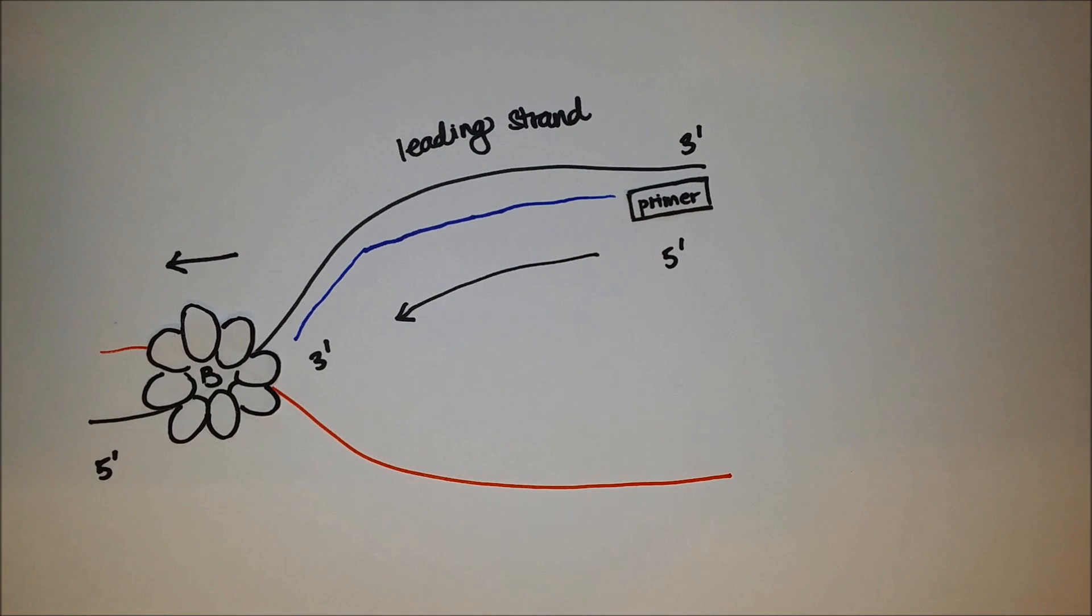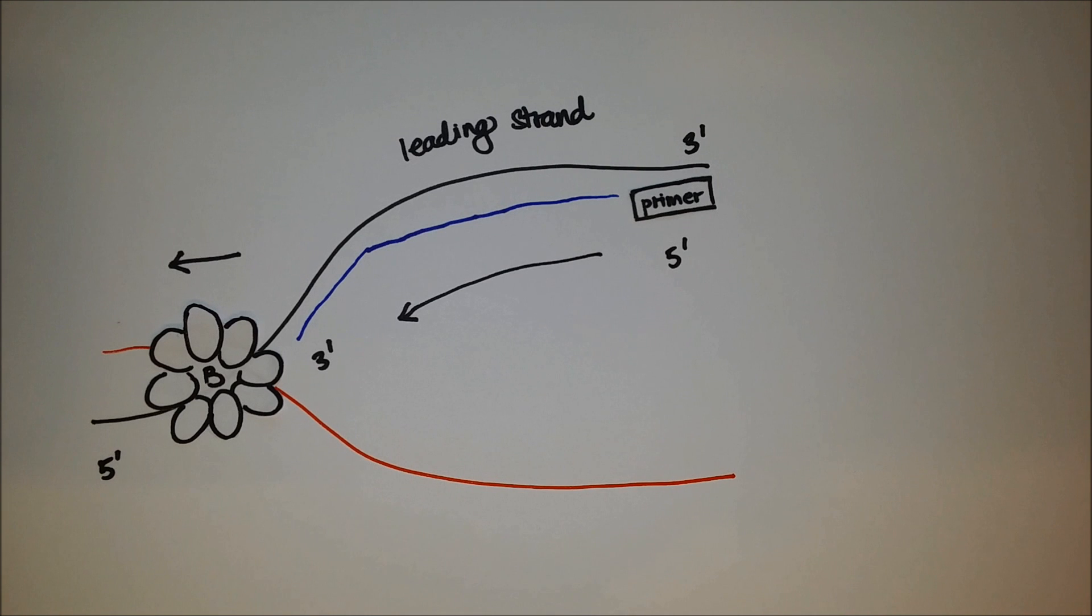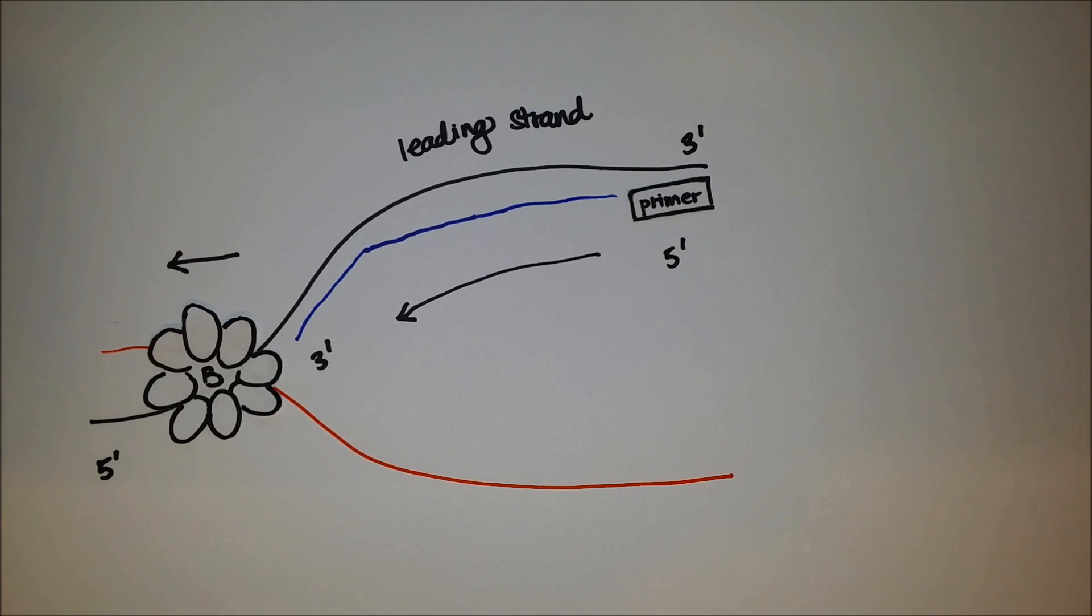Another feature of the DNA Polymerase 3 would be that it is able to recognize and replace incorrect bases with correct bases as it possesses 3' to 5' exonuclease activity.